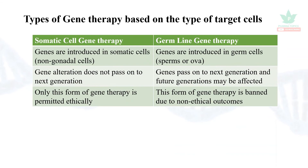The types of gene therapy based on the type of target cells: there are two types — somatic cell gene therapy and germline cell gene therapy. In somatic cell gene therapy, only somatic cells are used. The manipulation of the gene does not have an impact on the offspring, so this form of gene therapy is the only one ethically permitted till now.